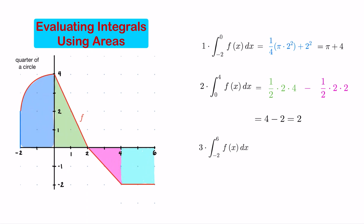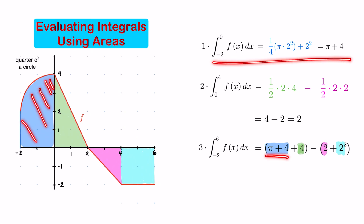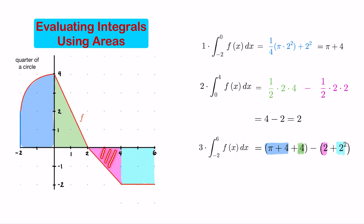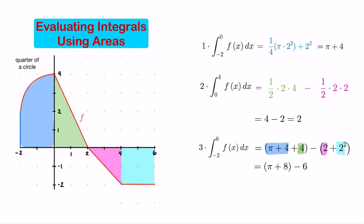The value of this integral equals π plus 4, which is the area of the first region, plus 4 for the triangle above the x-axis, minus the area of the triangle below equal to 2, and minus the area of the square equal to 2. So this is π plus 8 minus 6, which equals π plus 2.